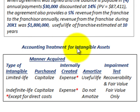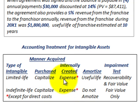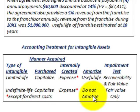For a typical accounting treatment, this is a limited life intangible — a purchased franchise agreement — so we capitalize it. If it were internally created, you'd typically expense it. Because it has a limited life, we amortize it over its useful life. If it had an indefinite life, we would not amortize it.